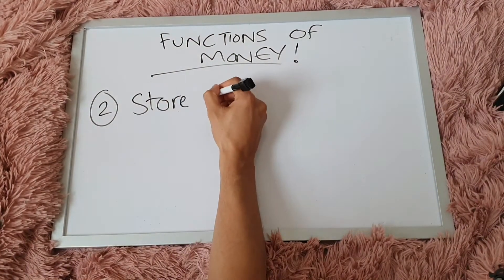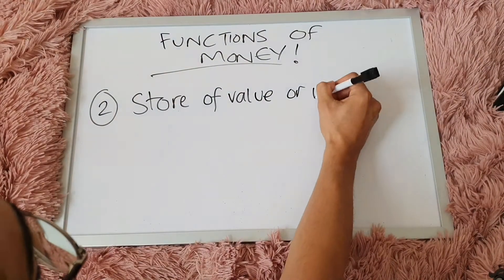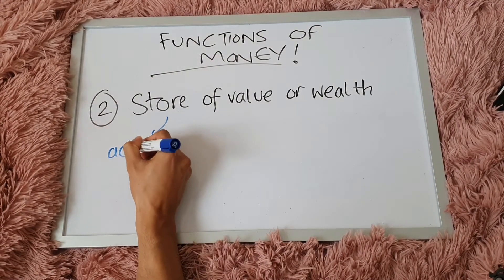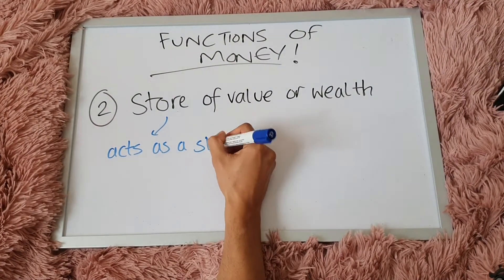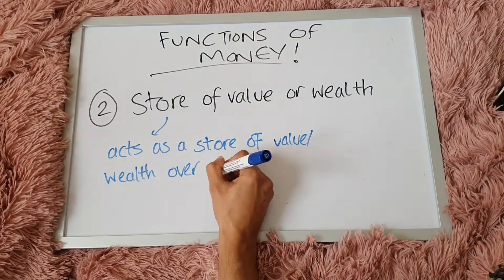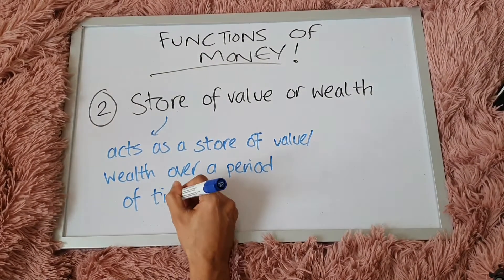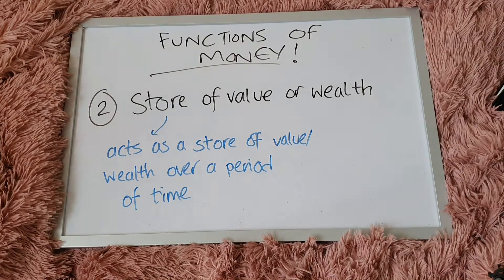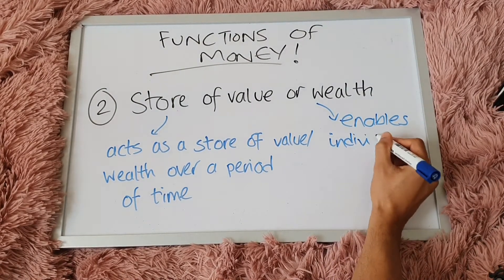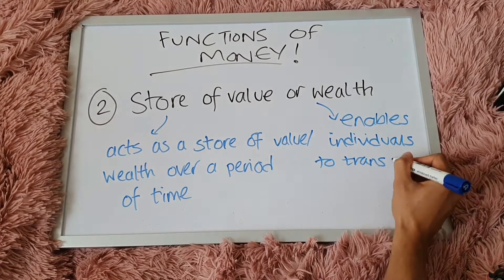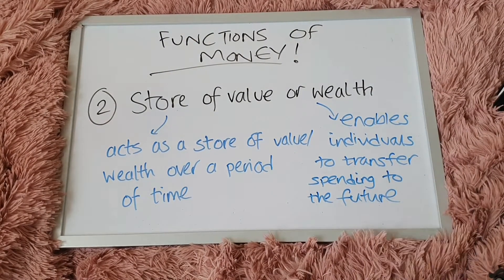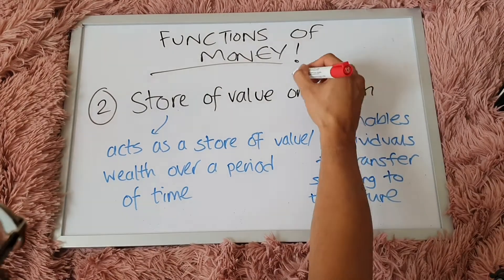The second function of money is the store of value or wealth. Money acts as a store of value over a certain period of time, so your money now in this particular day and month will be the same as the next day, the next month, tomorrow and thereafter. That store of value or wealth is sustained and has a value over a period of time. This enables individuals and also firms to spend in the future, knowing with the security that this money has a certain value and will be valued in the future.